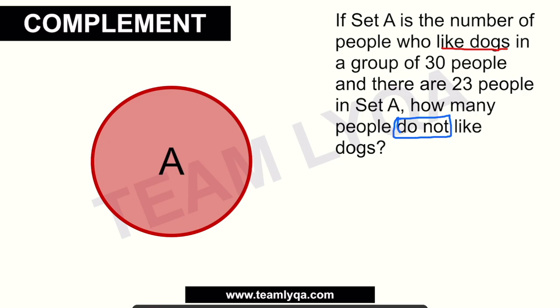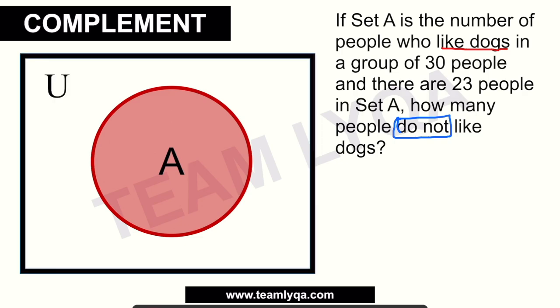The universal set is everyone involved in the situation — all 30 people. Set A has 23 people. What we're looking for is the complement of A, written as A with an apostrophe (A'). To get it, we do 30 minus 23, which gives us 7. So 7 people do not like dogs.